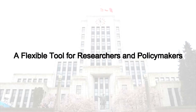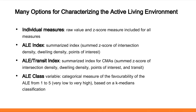We've done things to make this a flexible tool for research and policy communities. The dataset includes individual measures with both a raw value and a Z-score. We also have a summarized ALE index — the sum Z-score of measures available for all of Canada — and an ALE transit index, a summarized index only for census metropolitan areas that includes the transit measure as well. There's also an ALE class variable: a categorical measure of the favorability of the active living environment from one to five, from very low to very high, based on K-median cluster classification.